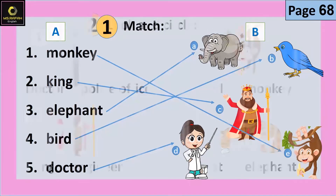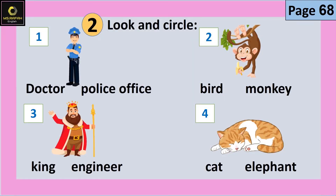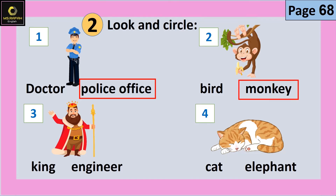Question number two: Look and circle — أنظر وضع دائرة. Police officer. Monkey. King. Cat.